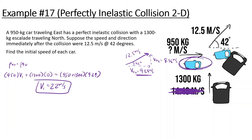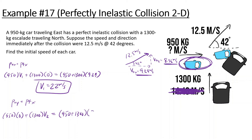Now for the Y direction: the first car (950 kg) is only going to the right, so Y velocity is zero. The Escalade (1300 kg) has an unknown Y velocity. After they hit, they move together at 8.36 meters per second in Y. So: (950 + 1300) times 8.36 divided by 1300 gives us 14.47 meters per second — that was the Escalade's initial speed.